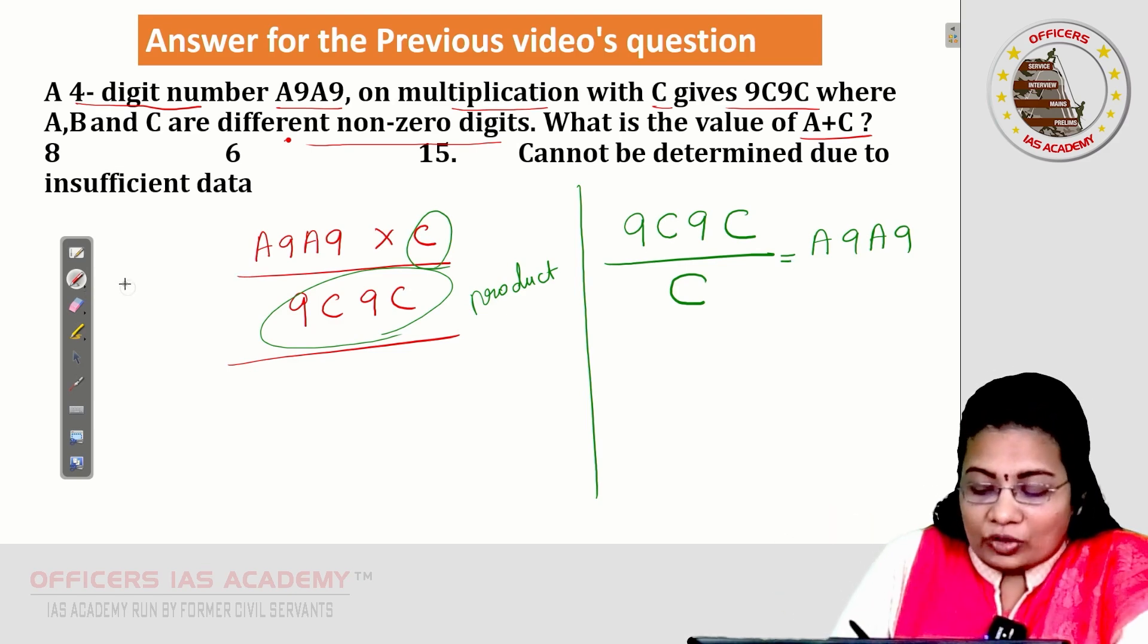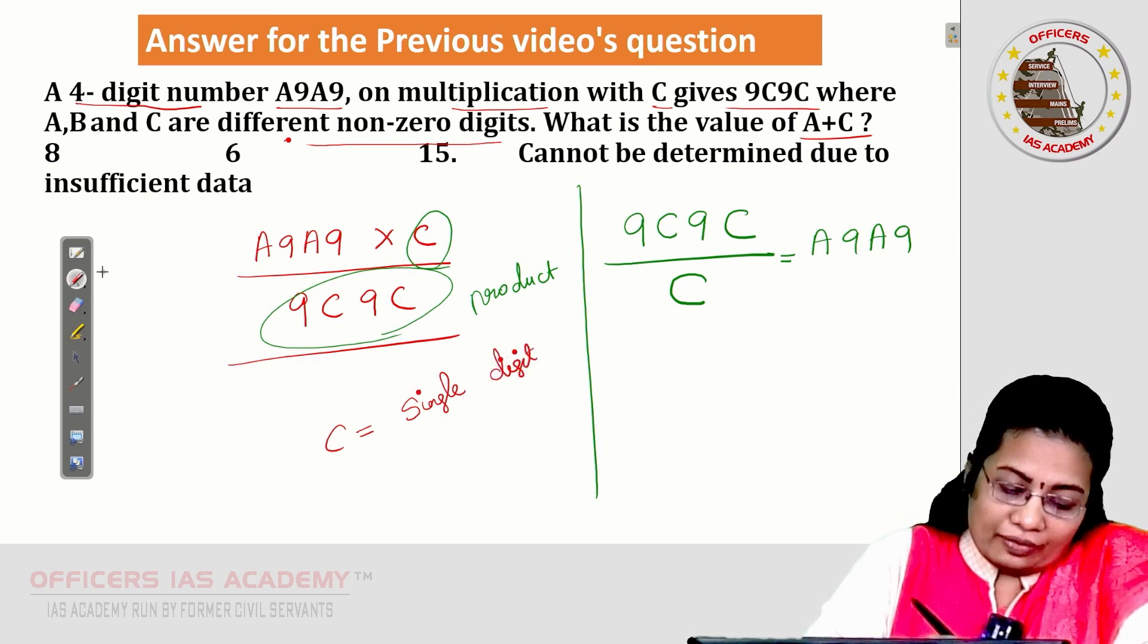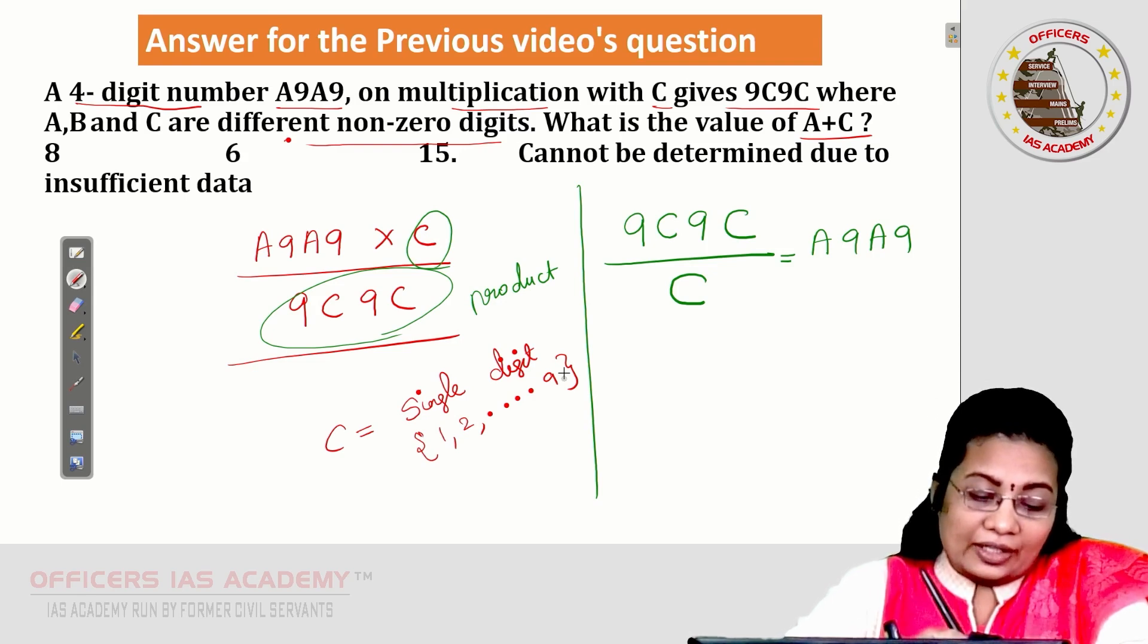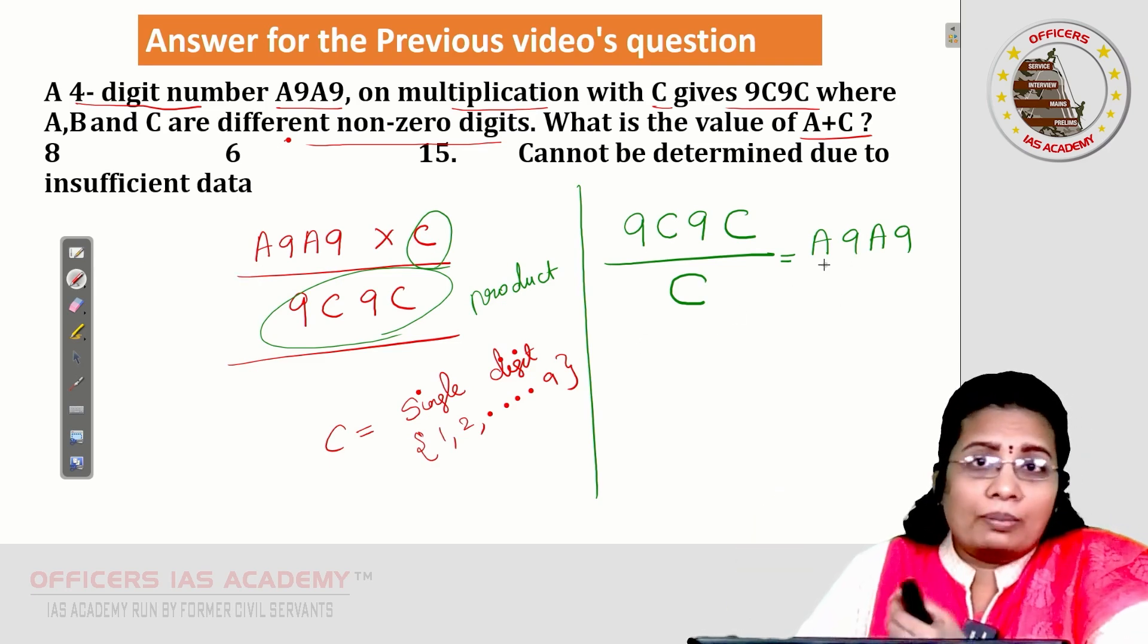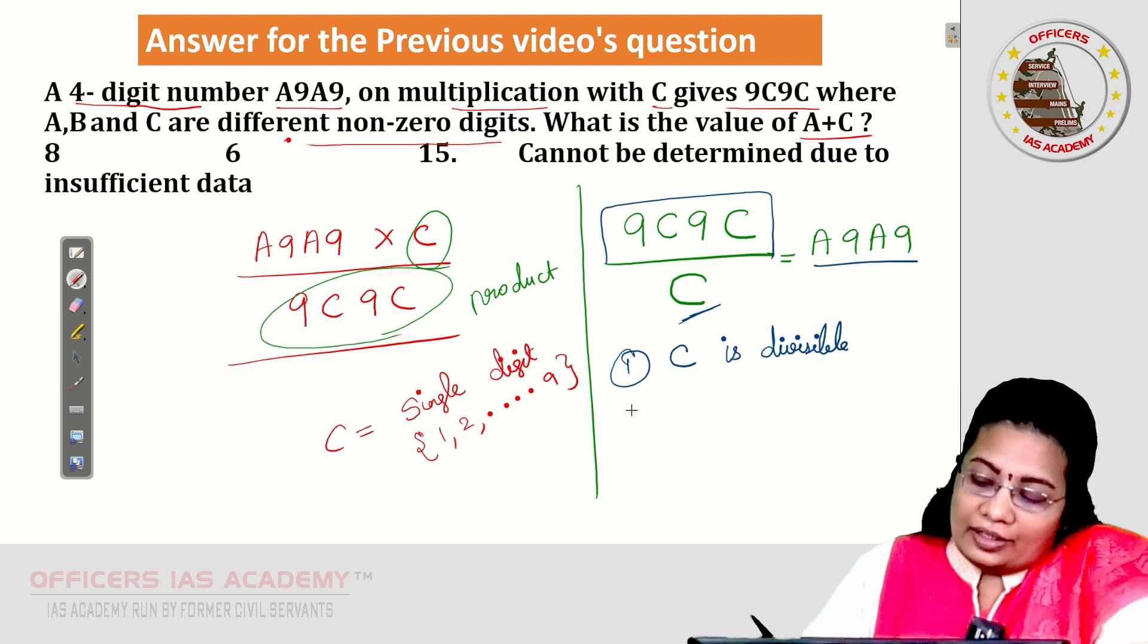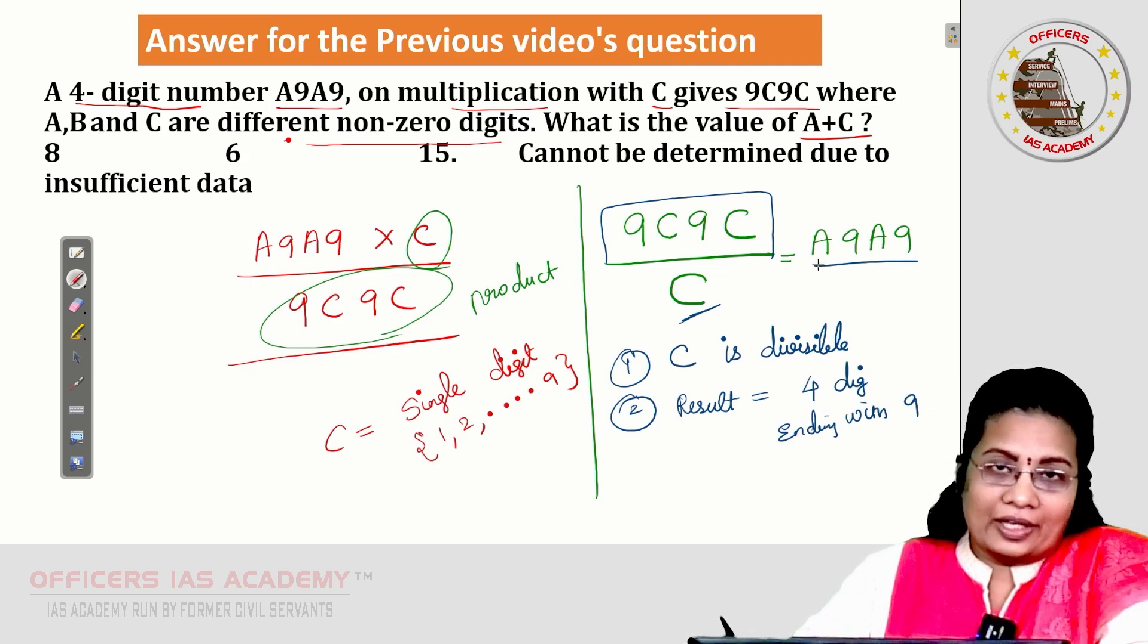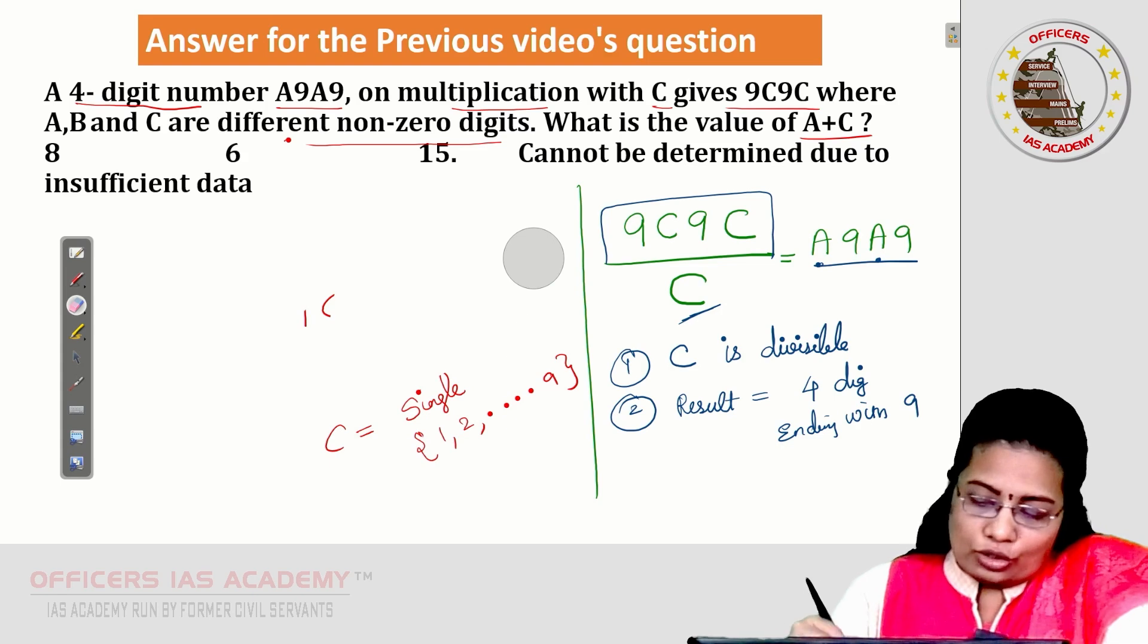How to decode this in a simpler manner is 9C9C while divided by C, we got A9A9 as the result. In this case, what is C? C is a single digit and also a non-zero digit. So, let me take the values of single digits. What are the single digits? 1, 2 up to 9 where my answer is satisfied by all the conditions. That one, I am going to choose as the final answer. Here what are the conditions? A9A9 is what kind of number? It is a natural number, which means first condition: C is divisible in that number. Second thing, the result is given as a four-digit number ending with 9. This is the second condition. And third one is A is placed in the two places, which means both the A are having same values.